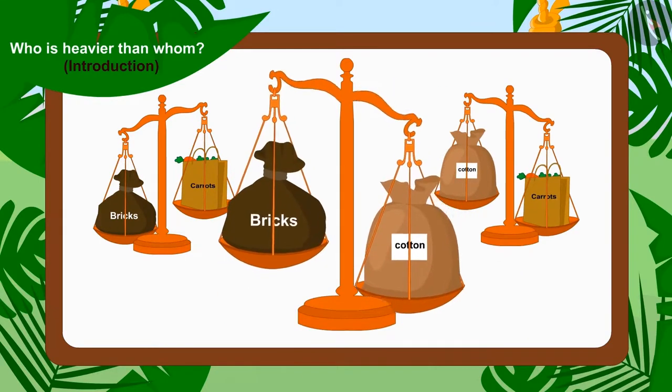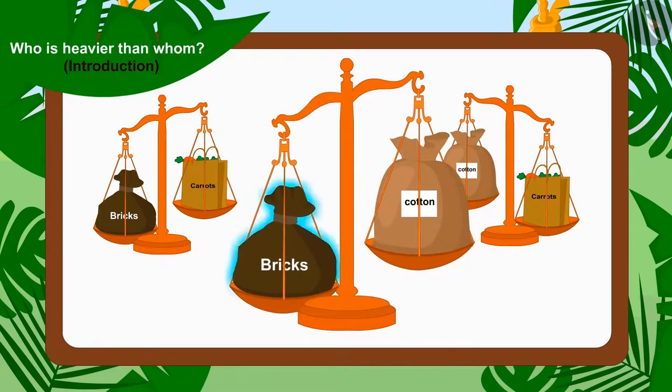Therefore, Shail Khan's sack filled with bricks is also heavier than Bhoola's cotton sack.